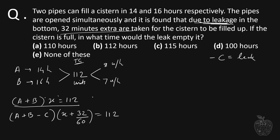From this equation we can find the value of X. A plus B equals 7 plus 8, which is 15. So 15 times X equals 112, giving us X equals 112 by 15. Now we substitute this value of X into the equation.